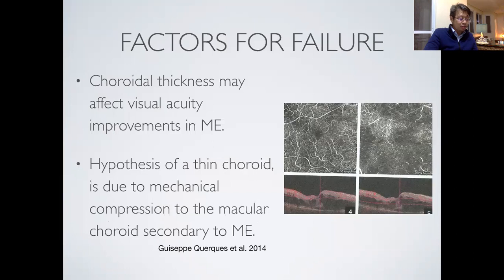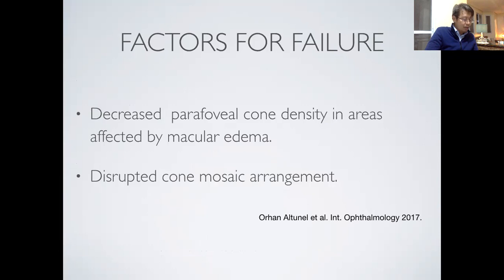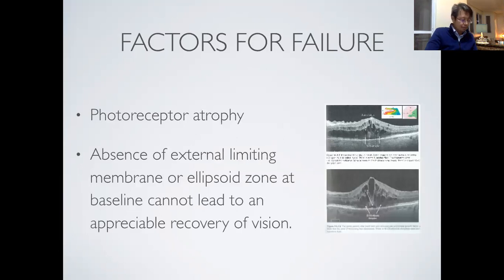There are several reasons why the response to treatments is poorer than expected. Choroidal thickness may affect visual improvements. A thin choroid, due to mechanical compression of the macular choroid secondary to CRVO-related macular edema, may deliver decreased amounts of oxygen and nutrients to the outer retina. This decreased delivery may affect signal generation by photoreceptors, or result in loss of photoreceptors. Decreased parafoveal cone density in areas affected by macular edema, as well as disruptive cone mosaic arrangement, have also been demonstrated. Non-improvement of vision has been associated with disruption of photoreceptors and atrophy of the inner retina.